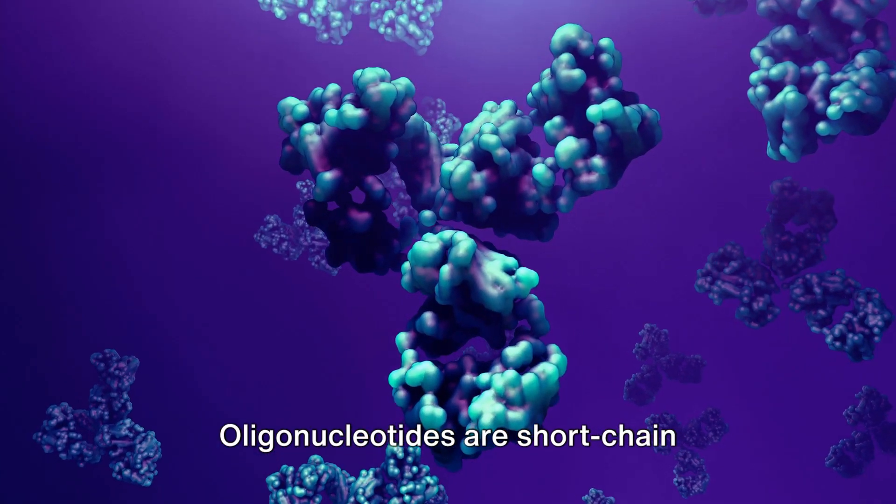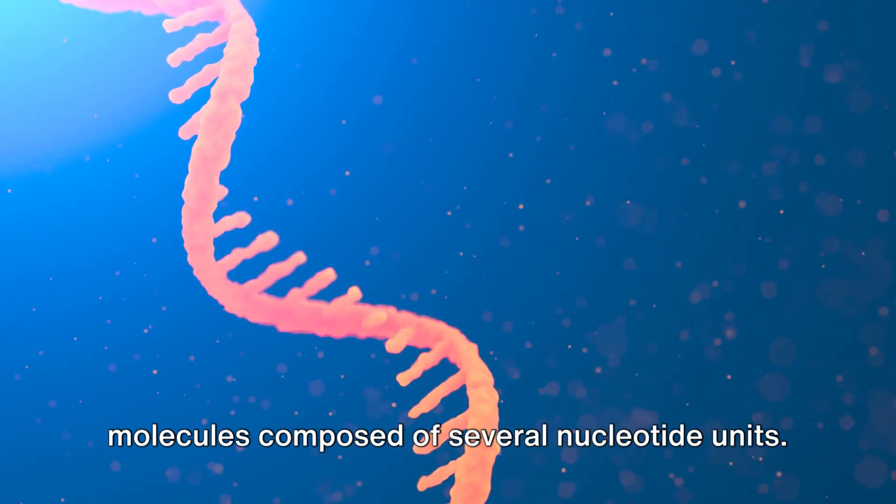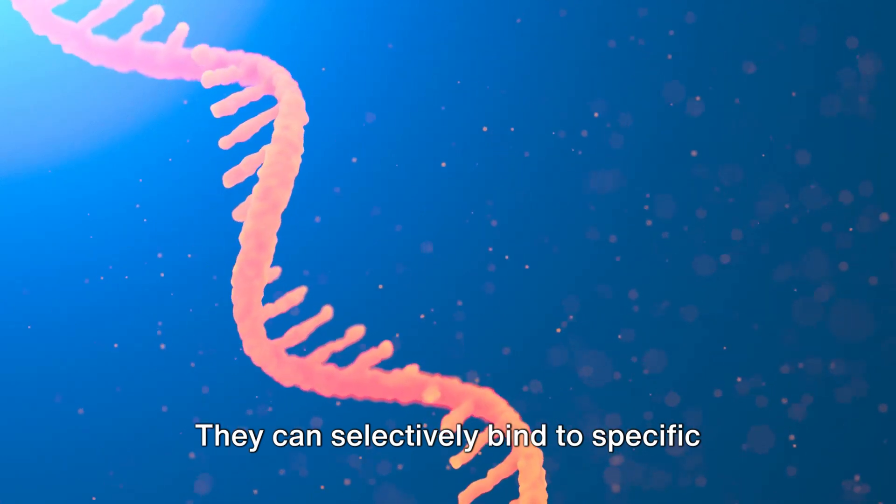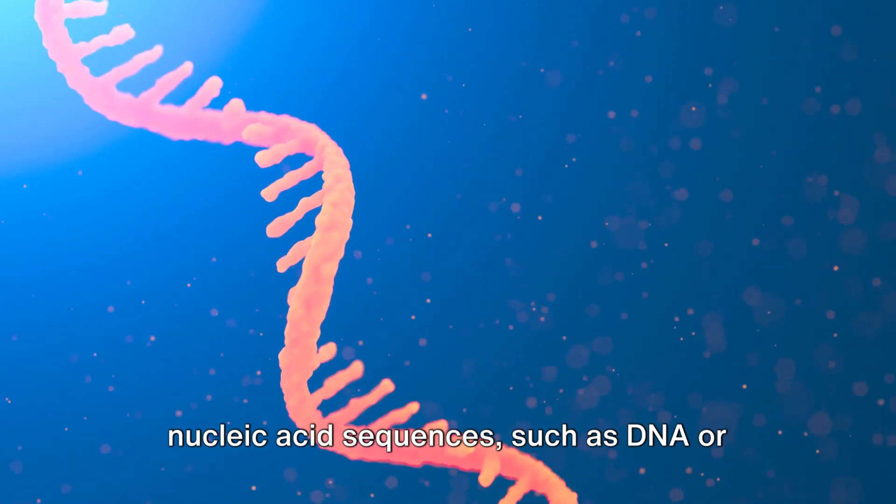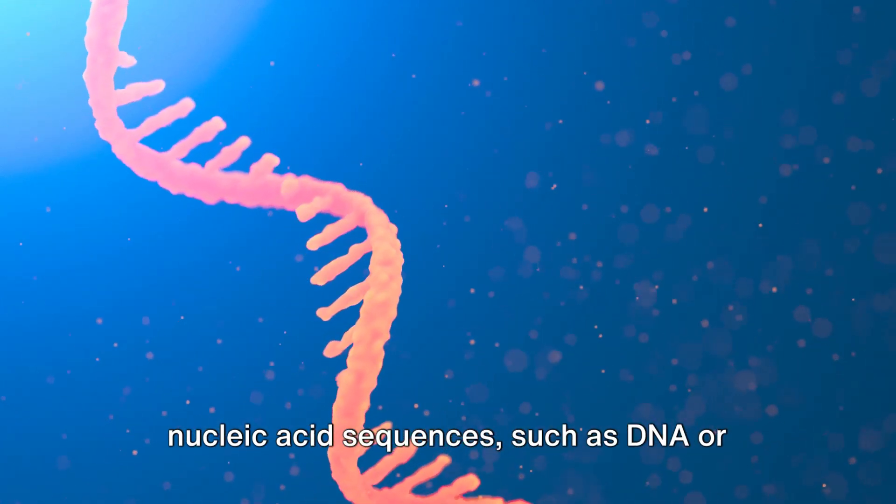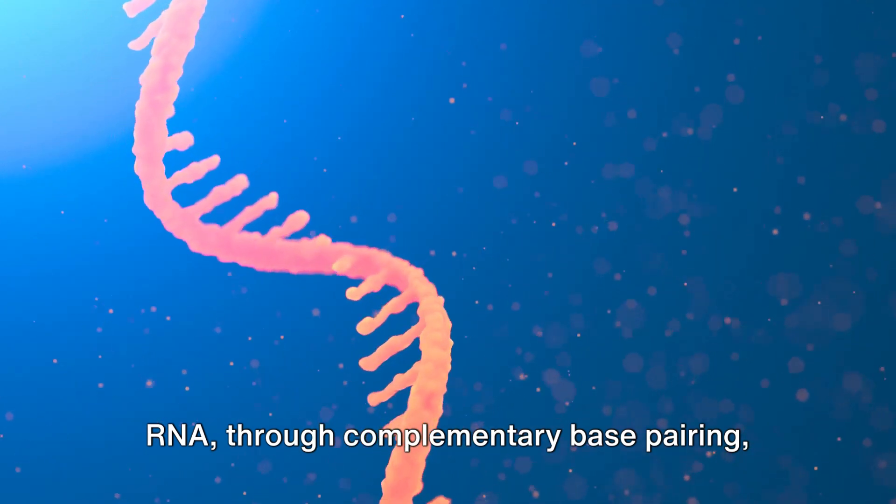Oligonucleotides are short-chain molecules composed of several nucleotide units. They can selectively bind to specific nucleic acid sequences, such as DNA or RNA, through complementary base pairing.